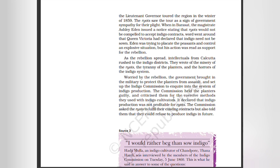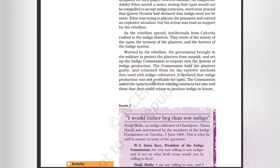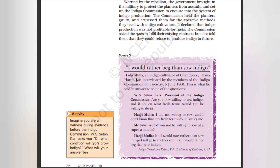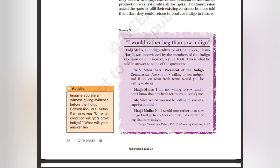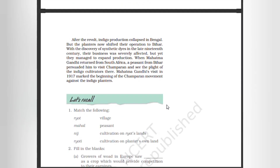The Commission held the planters guilty and criticized them for the coercive methods they used with indigo cultivators. It declared that indigo production was not profitable for ryots. The commission said that ryots had to fulfill their existing contracts but told them they would be free to refuse to produce indigo in future. One indigo cultivator, Haji Mulla of Chandpur, when interviewed by the Indigo Commission on Tuesday, 5th June 1860, was asked whether he was willing to sow indigo on any fresh terms. He replied: 'I am not willing to sow. No fresh terms would satisfy me. Rather than sow indigo I will go to another country. I would rather beg than sow indigo.'